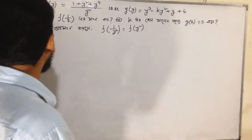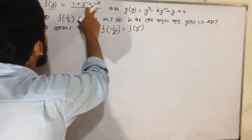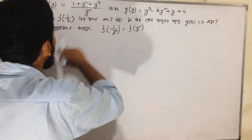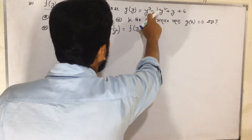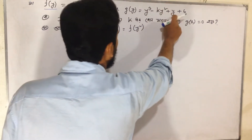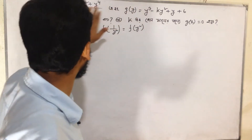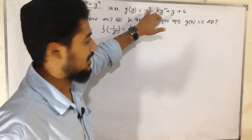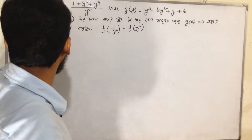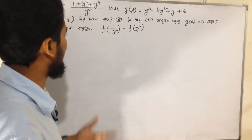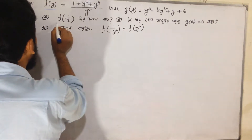We are going to put f of y equal to (1 + y² + y⁴) / y², and G of y equal to y³ minus k·y² plus y plus 6, raised to the power 4. Both are functionals, and we work with these functionals.